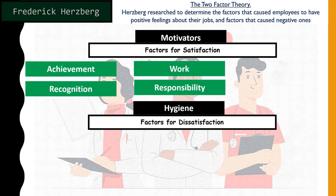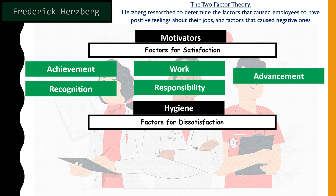Responsibility is another motivator — being given more responsibilities shows trust that employees can carry out and do more things, which makes them happy. Advancement opportunity is also key: if employees see a career path in the organization, that gives them positive feelings about their job. So there are five factors that may cause employees to feel positive and happy about their work.